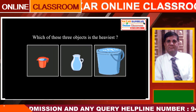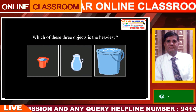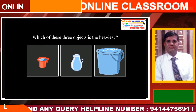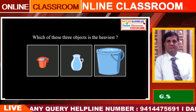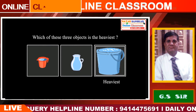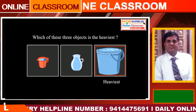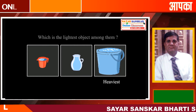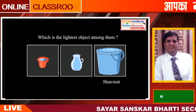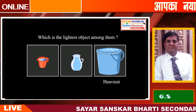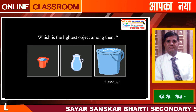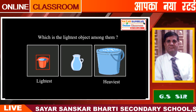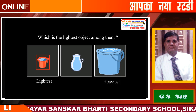So, children, can you tell me which is the heaviest object among these three? Yes, the bucket of water is the heaviest among these. And which is the lightest object among them? Your answer is right, children. The mug is the lightest among them.